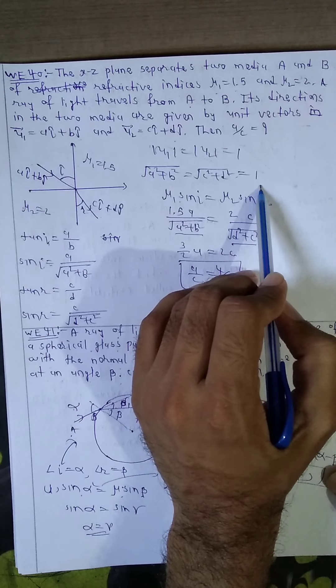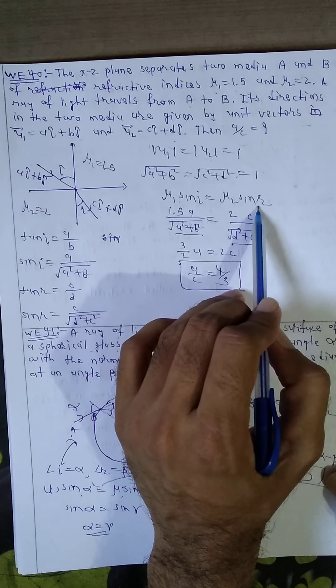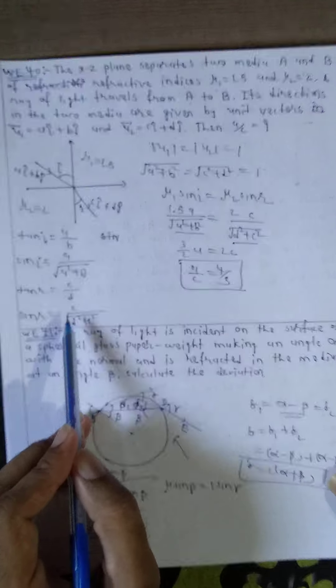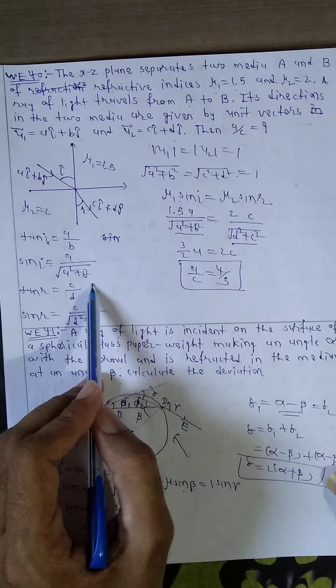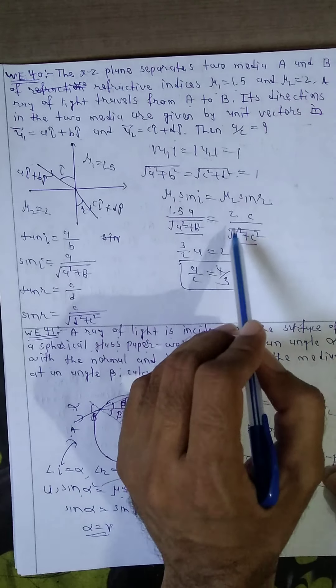Now according to Snell's law, mu1 sin i equals mu2 sin r. Put the value sin i equal to a upon under root a square plus b square. Sin r equal to c upon under root d square plus c square.